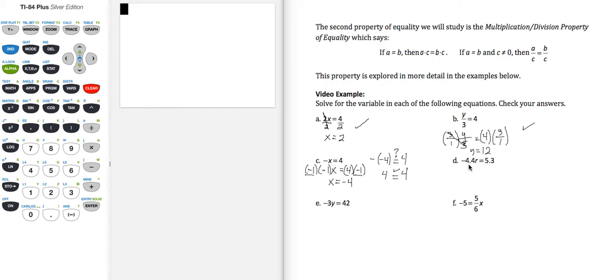For part d, I have negative 4.4 r equals 5.3. Well, I don't want to know what negative 4.4 r is, I want to know what r is. So I can take this original equation, divide both sides by negative 4.4. And then let's use our calculator. So I have 5.3 divided by negative 4.4. And that's going to give me a decimal. And so let's put an approximate symbol here. And let's round, we weren't given any instruction in the directions, but it's usually a pretty good idea to round to at least the hundredths place. So that's going to be negative 1.20.